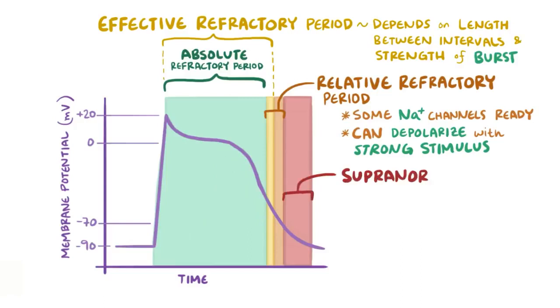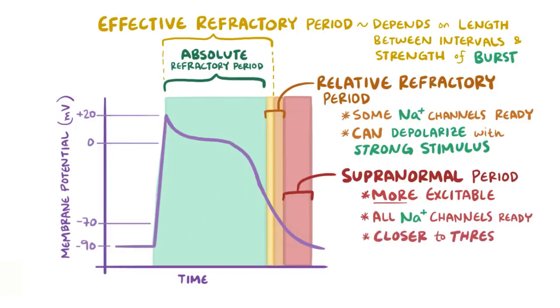Finally, we've got the supranormal period, where supra means more than, and this is when the myocyte is more excitable than usual. The supranormal period starts with the membrane potential at negative 70 millivolts, and it keeps going until the membrane is fully repolarized back to negative 90 millivolts. At this point, the sodium ion channels have completely recovered, and the channels are closed but in the ready state again. In this case, it's more excitable because that membrane potential is actually closer to the threshold potential than it is at rest, so it's slightly easier for the cell to depolarize.